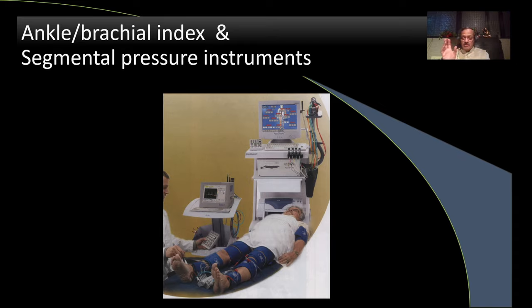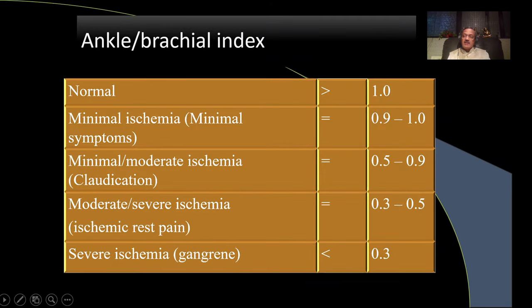In peripheral arteries, always take a history — diabetes and smoking are very important — and claudication. Palpate all the pulses and most importantly take at least an ankle-brachial index. It's very simple: you measure pressure at the level of the ankle and at the level of the upper arm. The ankle-brachial index is normally more than one; the lower the ankle-brachial index, the greater the severity of ischemia.